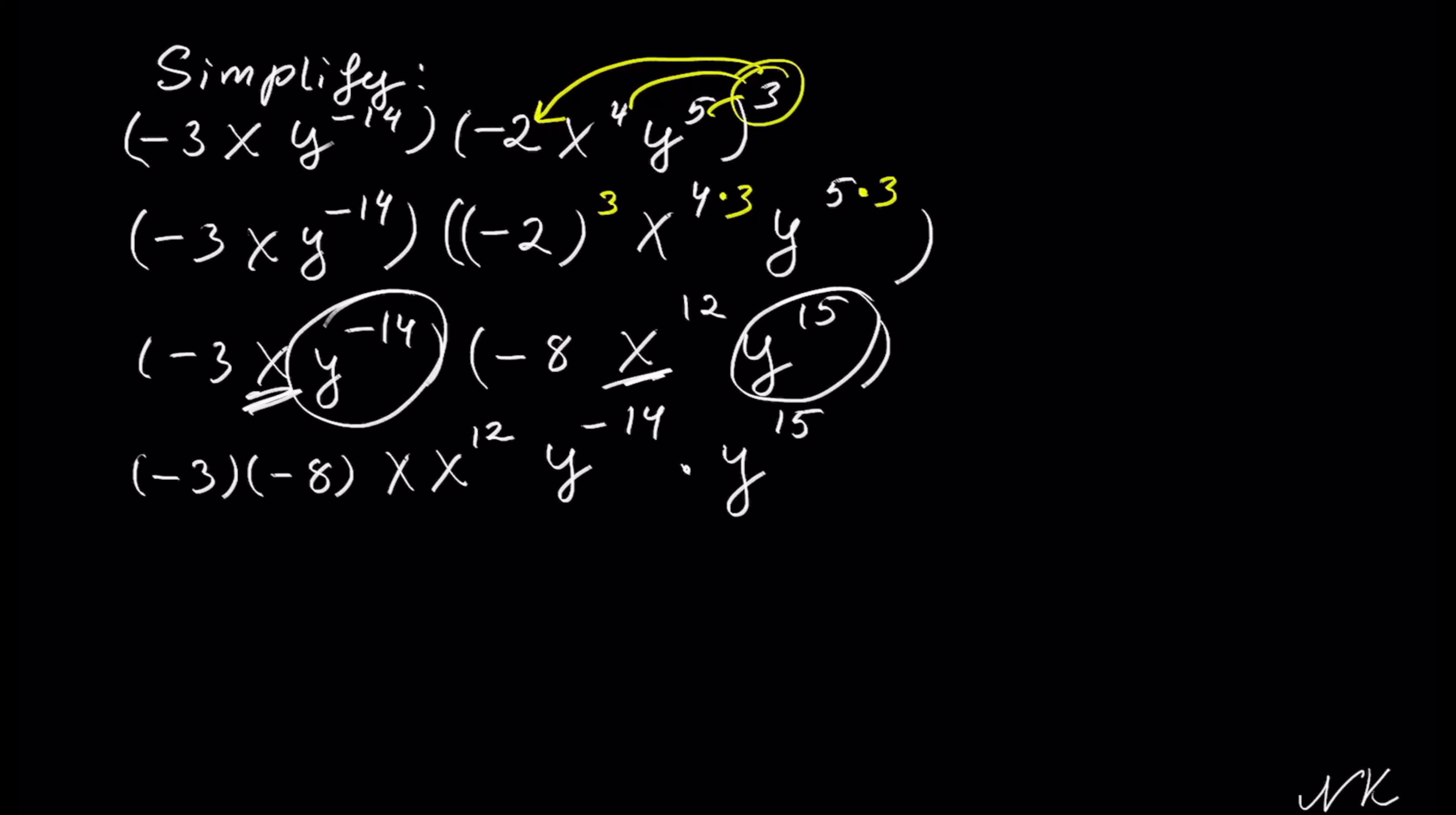Negative times negative is positive. 3 times 8 is 24. For x, we have one factor here, so 1 plus 12. Y to the negative 14 plus 15. This will become 24.